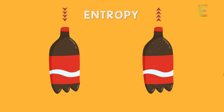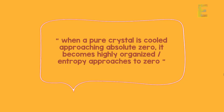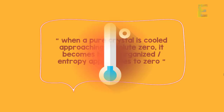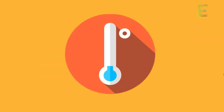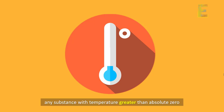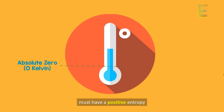The third law states that when a pure crystal is cooled approaching absolute zero, it becomes highly organized and entropy approaches zero. This means that any substance with a temperature greater than absolute zero must have a positive amount of entropy.